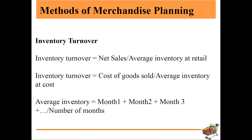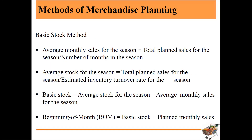When we talk about inventory turnover, the formula is net sales divided by average inventory at retail. The second formula — inventory turnover at cost — is cost of goods sold divided by average inventory at cost. Then average inventory equals month 1 plus month 2 plus month 3 (and so on) divided by the total number of months. If it is 6 months, it is divided by the number of months.